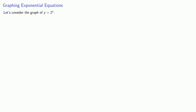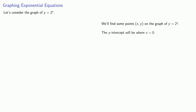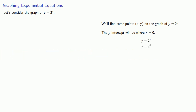Let's consider the graph of a basic exponential function like y equals 2 to the power x. We'll find some points (x, y) on the graph of y equals 2 to the power x. The y-intercept will be where x is equal to 0, in which case y is equal to 1. So (0, 1) is on the graph of y equals 2 to the power x.